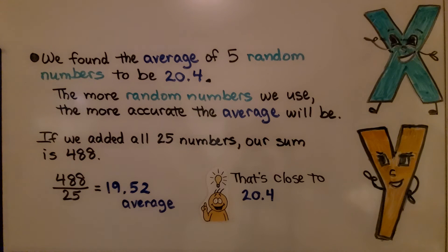We found the average of five random numbers to be 20.4. The more random numbers we use, the more accurate the average will be.